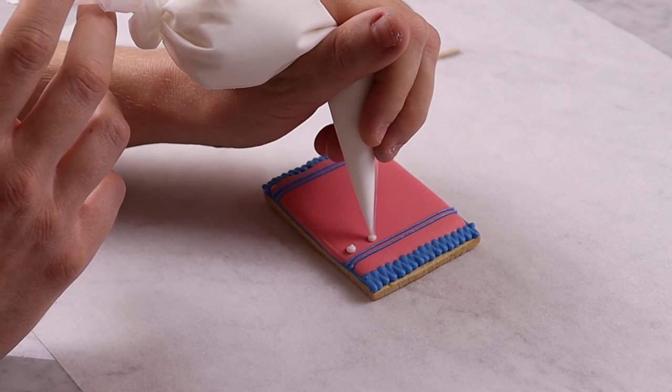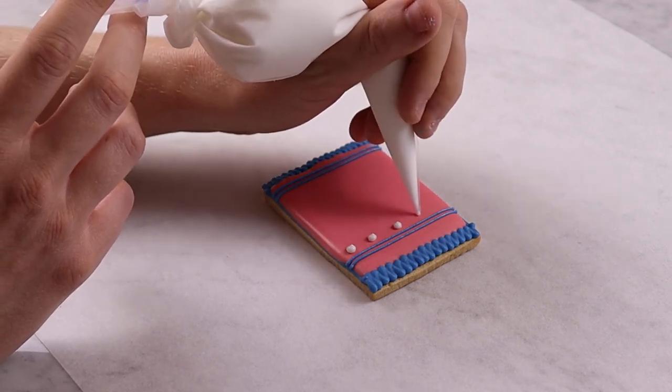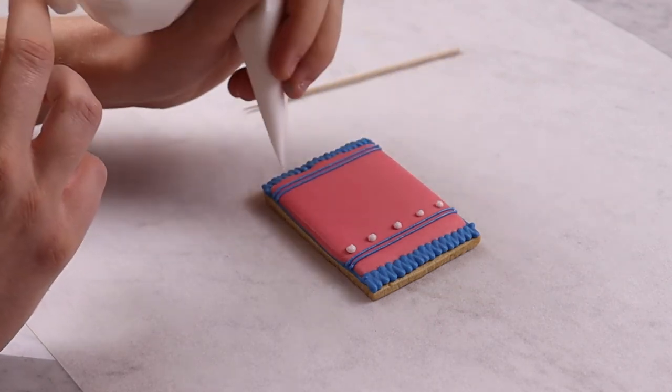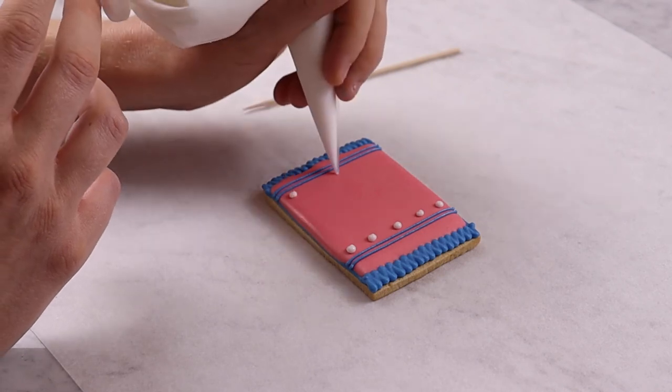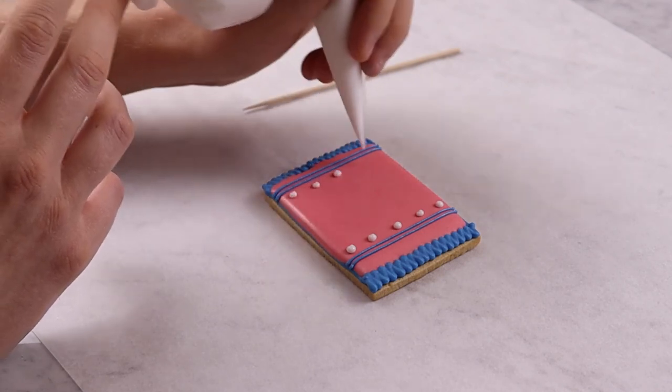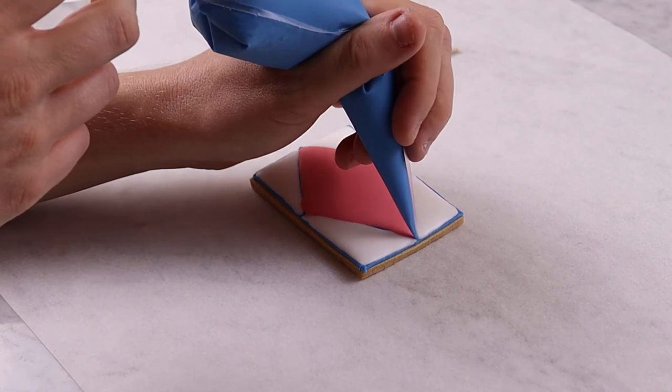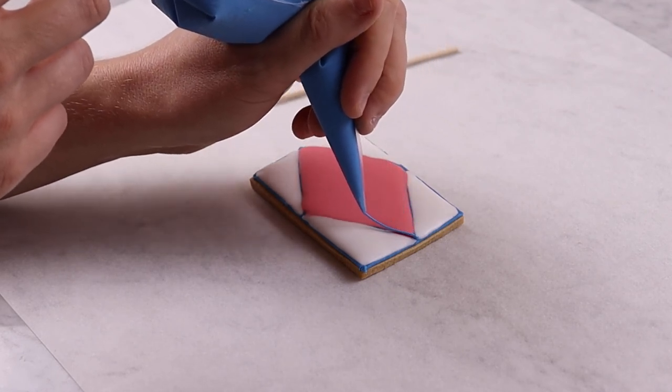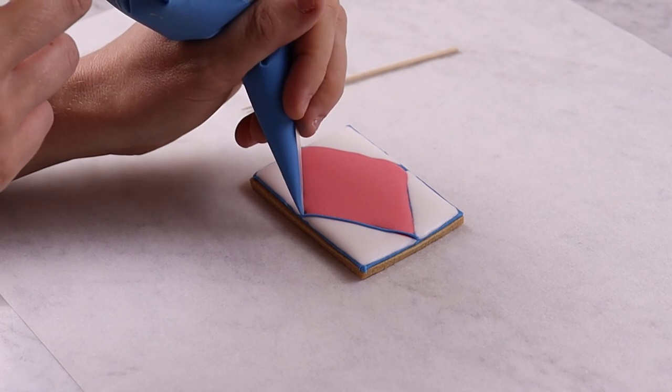Once the flood icing has dried you can use line icing to add finer details including decorations and text onto the biscuits at the end of the icing process. We will often go over the original line icing with more line icing to create a nice clean finish.